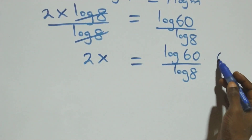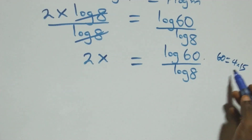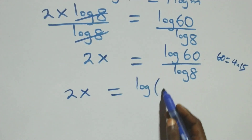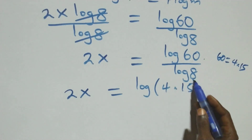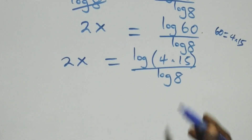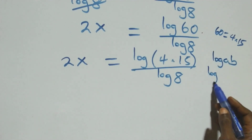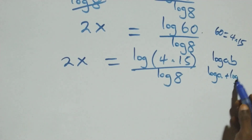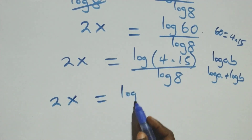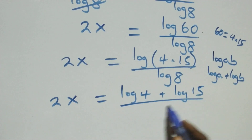Then we can write 60 as 4 times 15, which implies we have 2x equals log(4 times 15) over log 8. This follows the law of logarithm: log(a times b) can be written as log a plus log b. So this becomes 2x equals log 4 plus log 15, all over log 8.